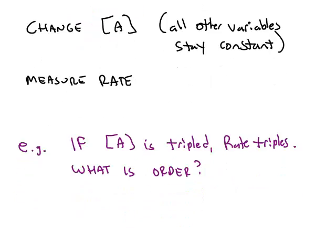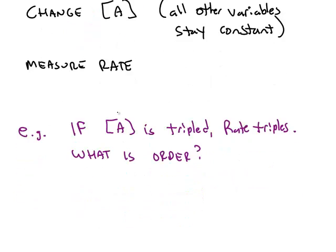So for example, let's do this experiment twice. One time we measure the concentration of A and we measure its rate. The second time we triple the amount of A, and we find out experimentally that the rate triples. From that, we want to figure out what is the order of this reaction.